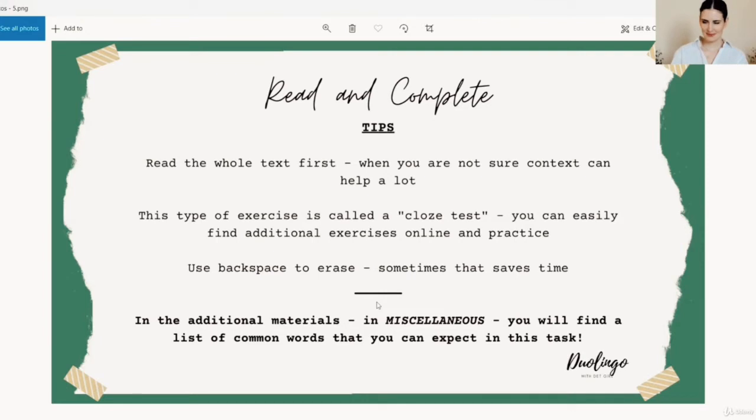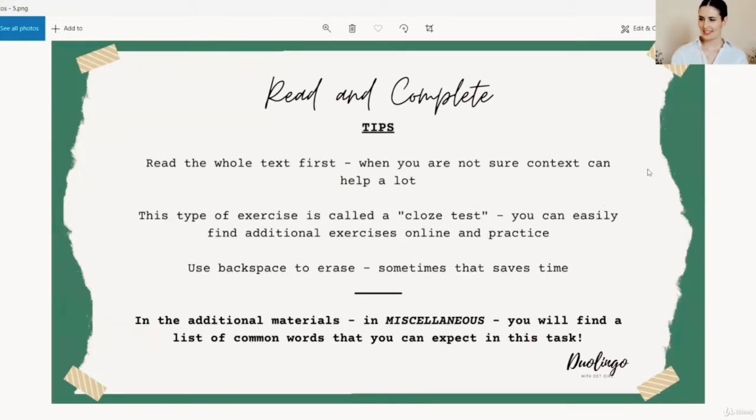Now we come to my favorite tip. In the additional materials in miscellaneous points, you will find the list of common words that you can expect in this type of task. Those are articles, prepositions, pronouns. You will see the list and most importantly, the examples. When you go through that, you can actually very easily sometimes fill in even more than half the text that you're given. In this particular paragraph, we have nine words missing. Five of them are the words from the list of the most common words that I have given you: there, who, of, et cetera. Sometimes it's even more. I found examples where out of 11 missing words, eight of them are the most common ones.